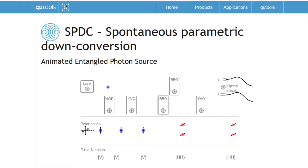I'll describe the source using an animation from our web page. We have a high-power pump laser at 405 nanometers. For simplicity, here it's emitting only one photon, which hits a BBO crystal — a non-linear crystal. In this crystal, the pump laser photon is down-converted with a certain probability into two photons with double the wavelength and half the energy. These two photons are coupled into optical fibers and led to a detection unit with single photon detectors — APDs — and a coincidence logic to determine if two events are from the same event in the BBO crystal.